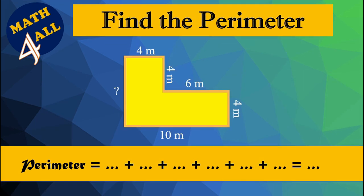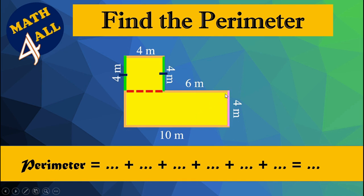Find the perimeter of this polygon. We have to add all the sides, but there is a missing side. To solve this, we cut the shape into two polygons. One is a square — its sides are equal, so this side equals four meters. The other is a rectangle — the opposite sides are equal, so that side also equals four meters. Adding four plus four plus four gives us the long side, which equals eight meters.